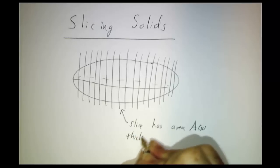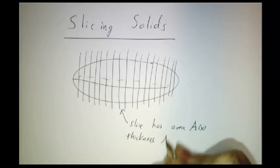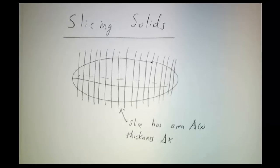And it has a thickness, delta x. Now, to figure out A of x, you're going to have to do some geometry. You have to figure out what is the shape you get when you slice your solid and how big is it.